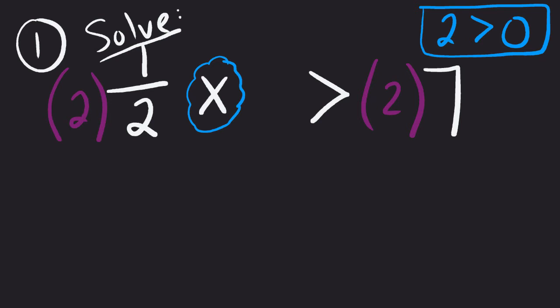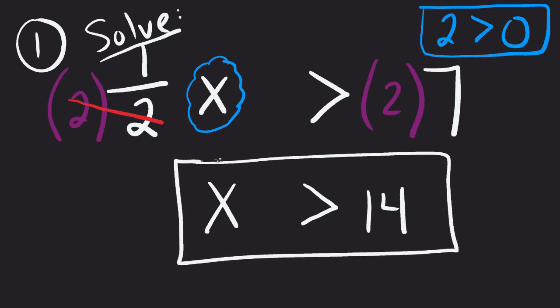So the twos here will reduce out. The x will come straight down because two times one-half, or two divided by two, is one. The inequality will not change according to this property, and two times seven will give us 14. So the inequality does not change direction as long as we're multiplying both sides by a positive value.